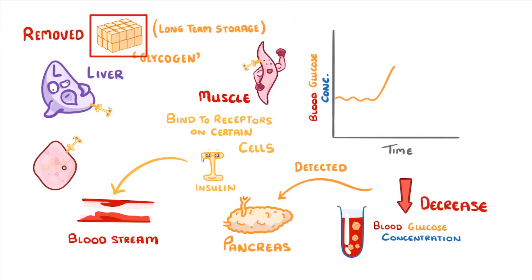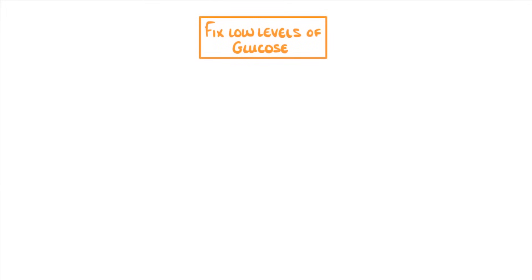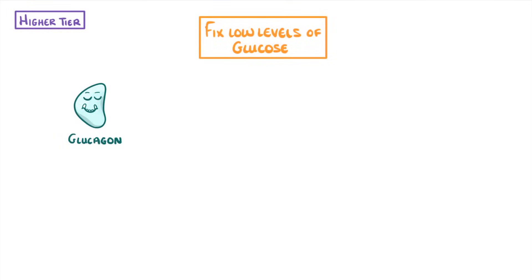Looking back at our graph, we can see the glucose concentration falling back to the normal level. So we now know how our body fixes high levels of glucose, but we also need to be able to fix low levels of glucose. And this is where glucagon comes in.